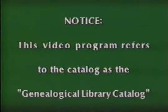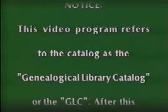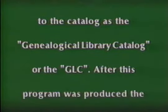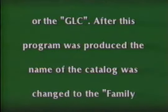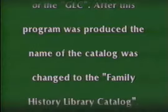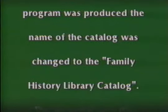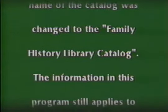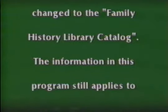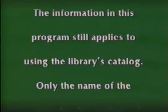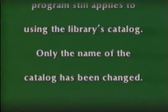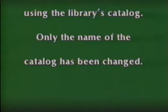This video program refers to the catalog as the Genealogical Library Catalog, or the GLC. After this program was produced, the name of the catalog was changed to the Family History Library Catalog. The information in this program still applies to using the library's catalog — only the name has been changed.